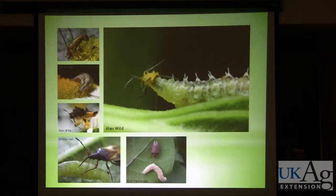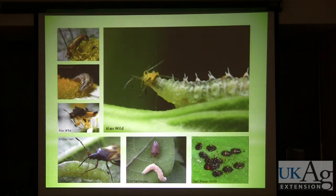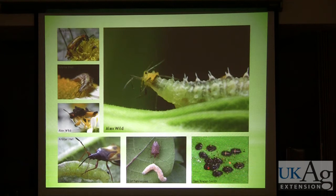There are a number of different true bugs — insects that are actually correctly called bugs. For example, here's a predatory stink bug. Another example are lady beetles. This is the twice-stabbed lady beetle. There's the adult, and over here are a couple in the larval stage, and the rest are in the pupal stage.